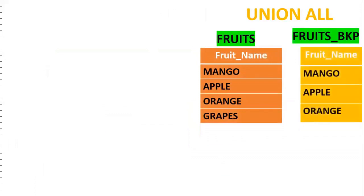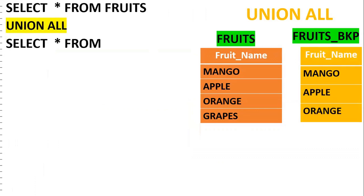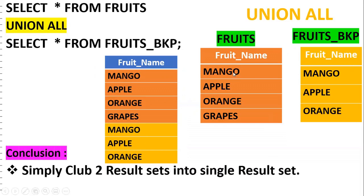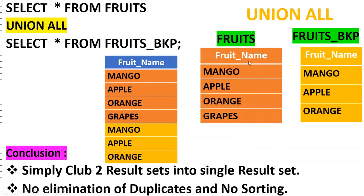Next we'll see union all. Fruits table has four records; fruits_backup has three records. Select * from fruits UNION ALL select * from fruits_backup. Union all simply clubs two result sets together - it takes this result set and pastes the other result set into a single result set. It won't do any elimination of duplicates - duplicate values will be there. And no sorting will be performed. Hope this is clear.